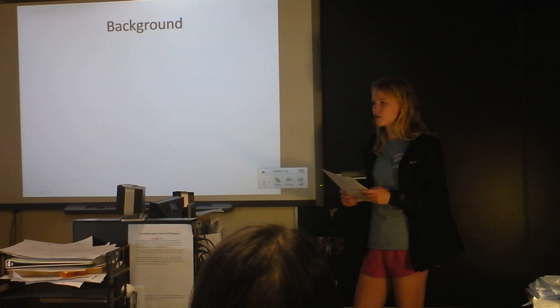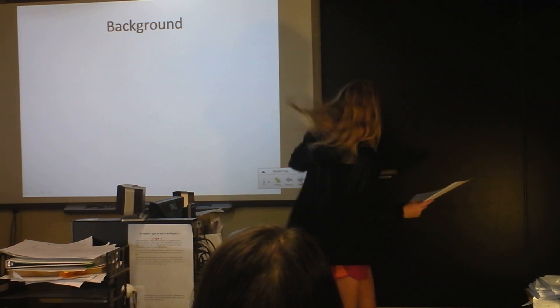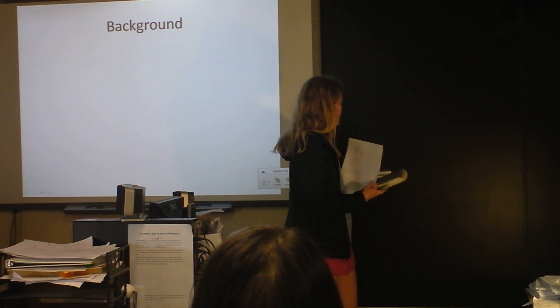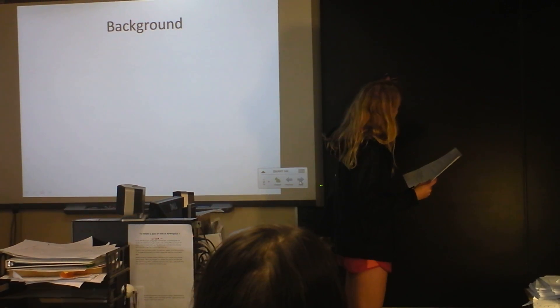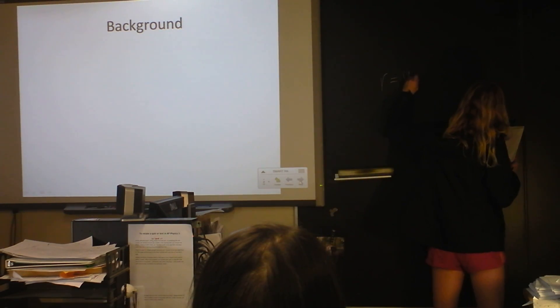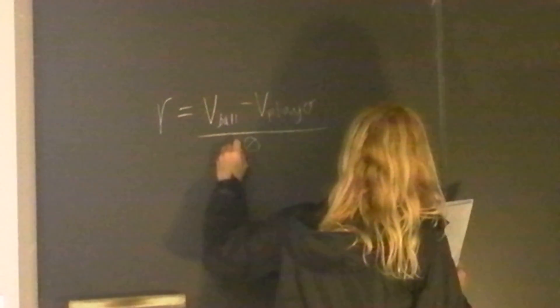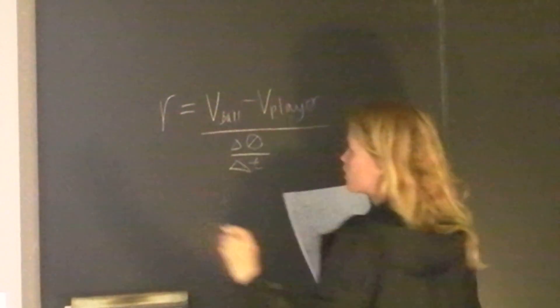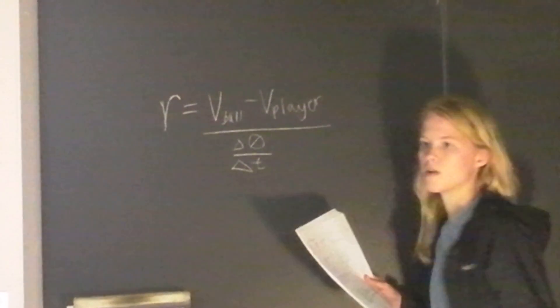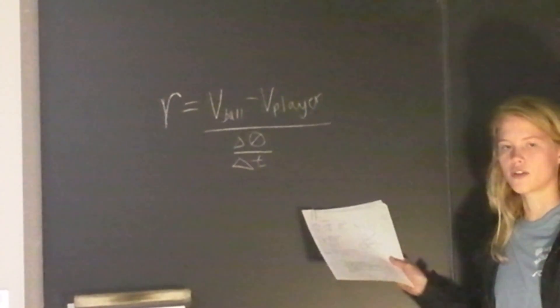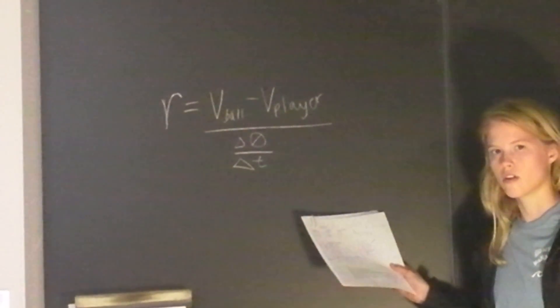For some reason I didn't write the equations for the background. The main equation was, we used R equals V initial minus V final or delta V over delta T. This is the radius from her belly button. And should I show how we derived it? How we got it? I think you can skip that.